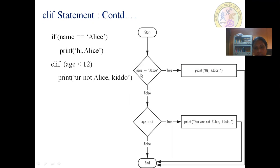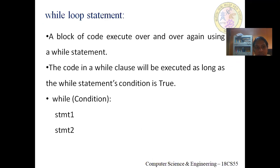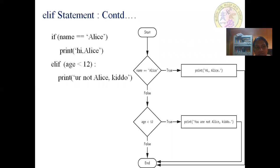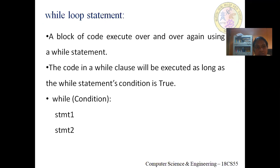Looking at the flowchart: starting from the top, the user enters a name. If the name equals Alice, it prints 'hi Alice' and exits the if statement. If the condition is false, we check another condition — is age less than 12? If true, it prints 'you are not Alice, kiddo' and reaches the end. This if-elif-else ladder can be continued at any level.